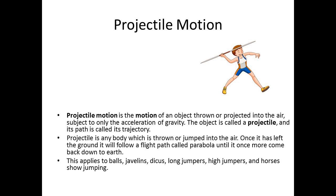A projectile is any body which is thrown or jumped into the air. Once it has left the ground, it follows a flight path called a parabola until it comes back down to the earth, creating a curved path. This applies to balls, javelins, discus, long jumpers, high jumpers, and horses — all sports activities.